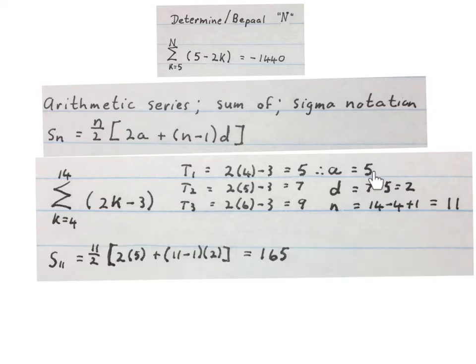Then substitute all these values into the sum formula. We get our final answer. The sum of these 11 terms is 165. Please stop the video and make sure you understand this part.